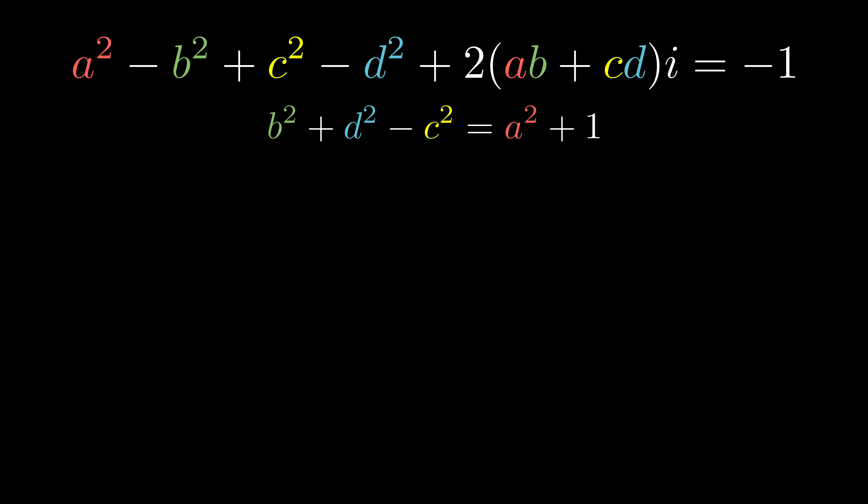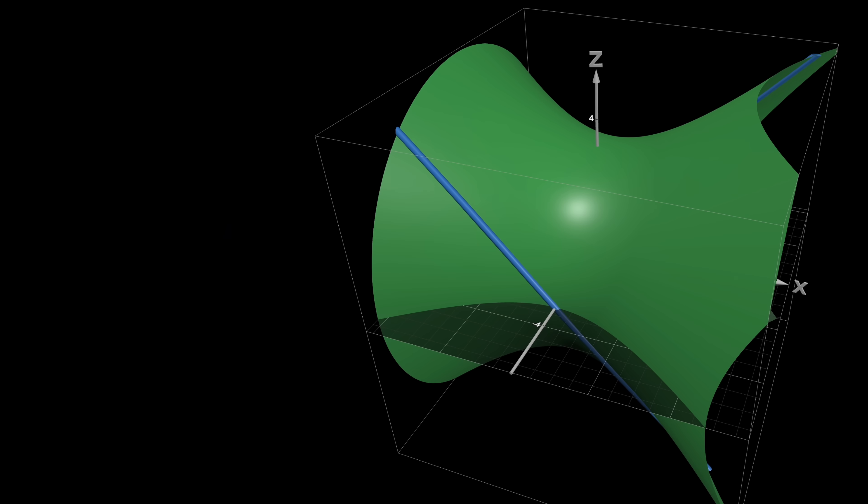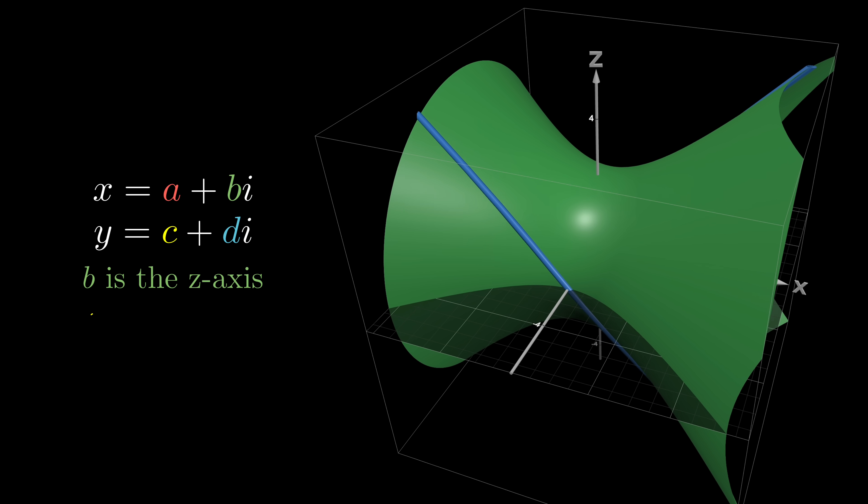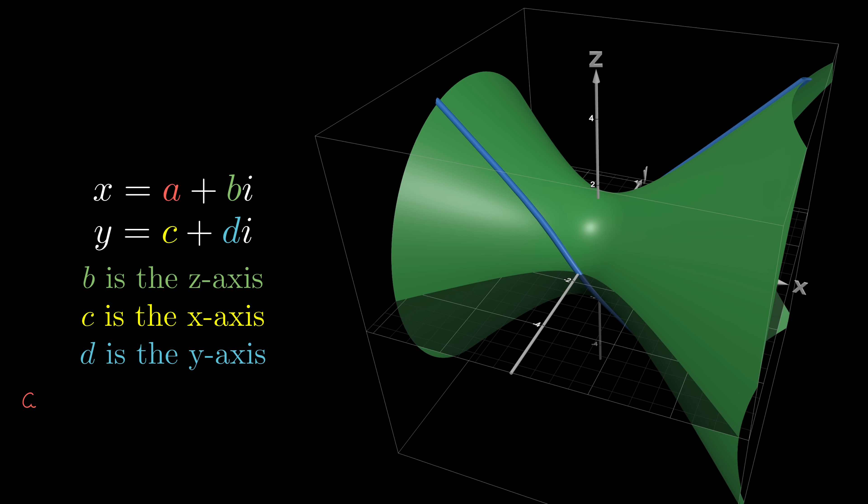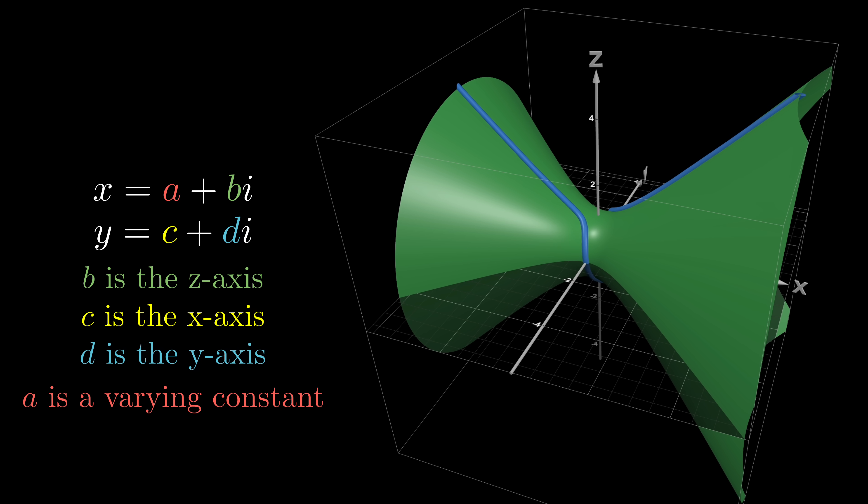Now let's project this 4D structure to the 3D surface where the real part of x, a, is a constant. Because a squared plus one is always positive, so our hyperboloid will only contain one sheet, which means it's always connected.